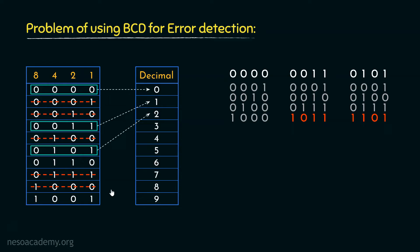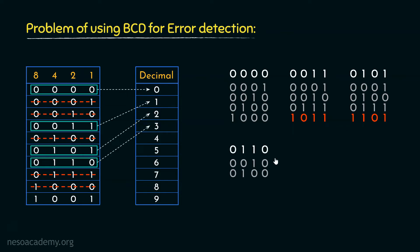The next pattern to assign to symbol 3 is 0110. We will invalidate all the unit distance patterns of 0110. Toggling each bit gives: 0010, 0100, 0111, and 1110. 0010, 0100, and 0111 are already invalidated due to previous assignments. 1110 is again an invalid BCD code, so we won't be able to use it.